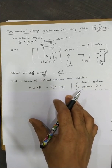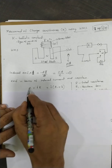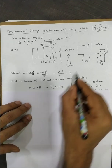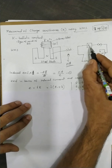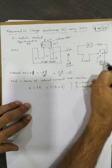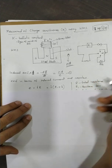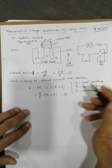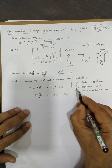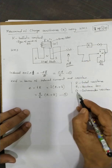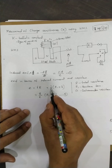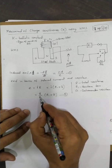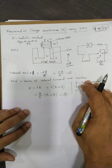The induced EMF can also be expressed in terms of induced current and resistance: EMF equals current times resistance, where the total resistance R equals R1 plus G. Here R1 is the resistance included in the resistance box and G is the galvanometer resistance. Since current I equals Q divided by t, we have I equal to Q/t. This is equation 2.